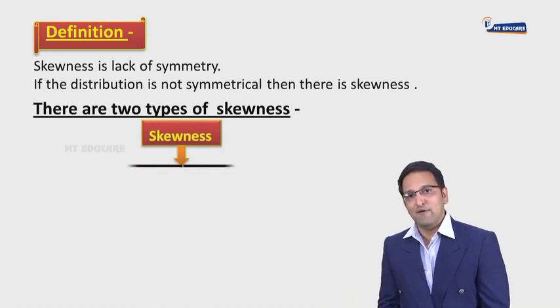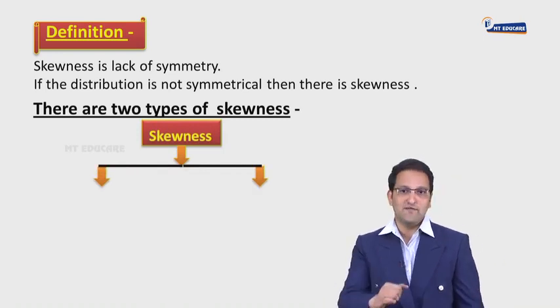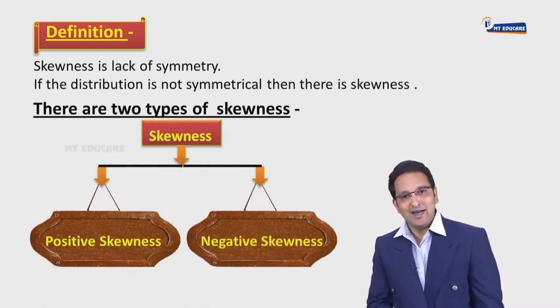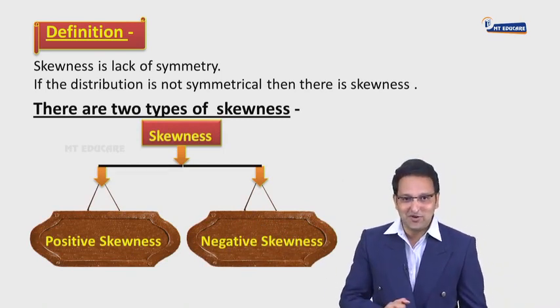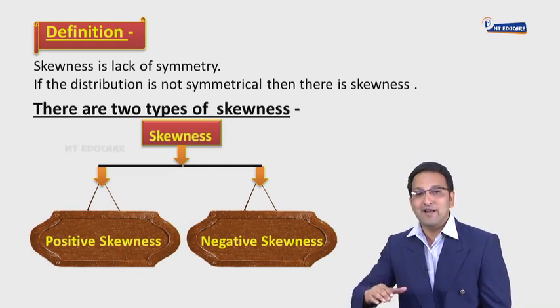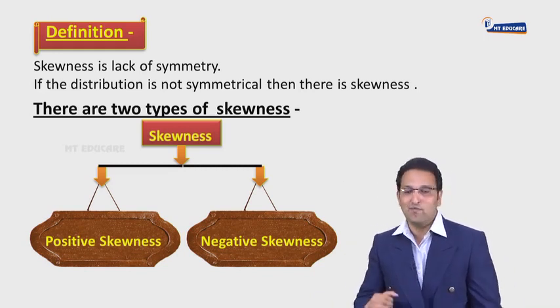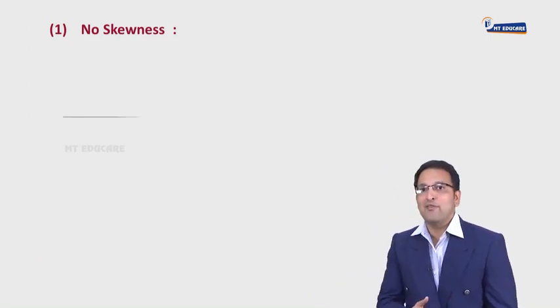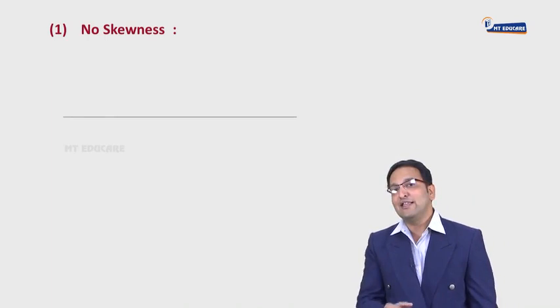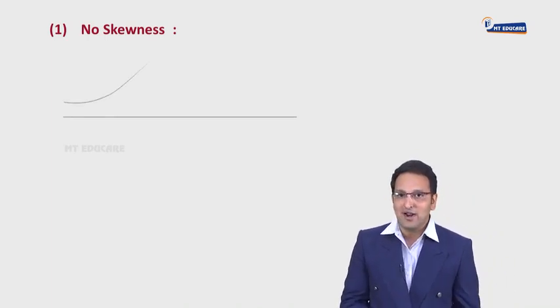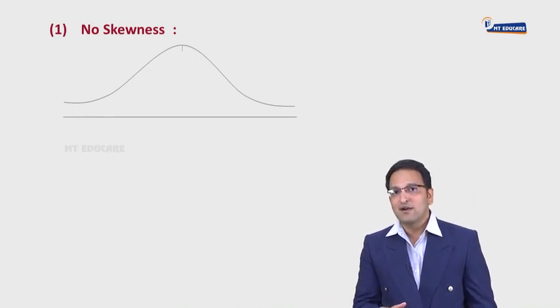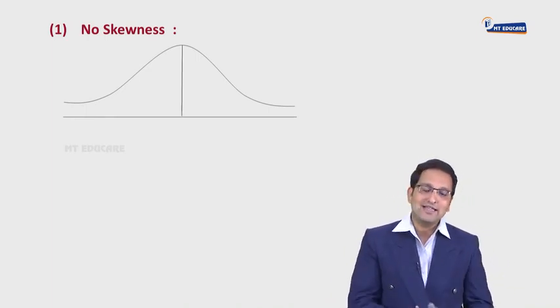Let's see the types of skewness. First of all, there is positive skewness, and the second type is negative skewness. Ab iska bhi matlab kya hai, mein aage bolne wala ho. Now, after these two types, there is also no skewness. What do you mean by no skewness? Let's check this chart with the x-axis and y-axis.